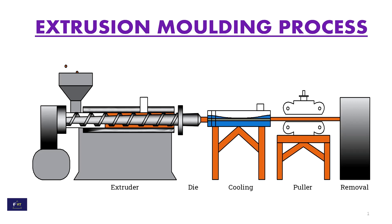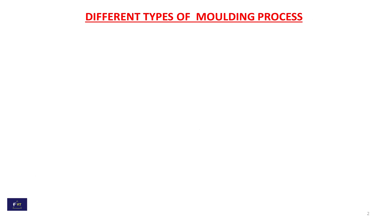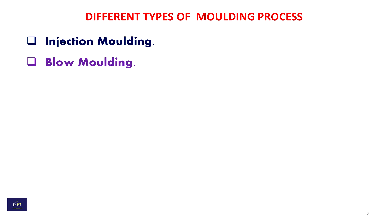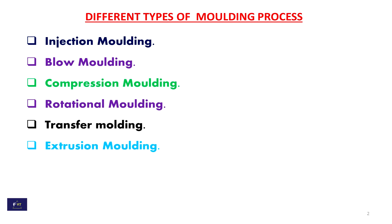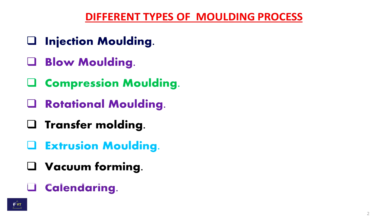Extrusion Molding Process. Different types of molding process include: Injection Molding, Blow Molding, Compression Molding, Rotational Molding, Transfer Molding, Extrusion Molding, Vacuum Forming, and Calendering. These are the different types of molding process.